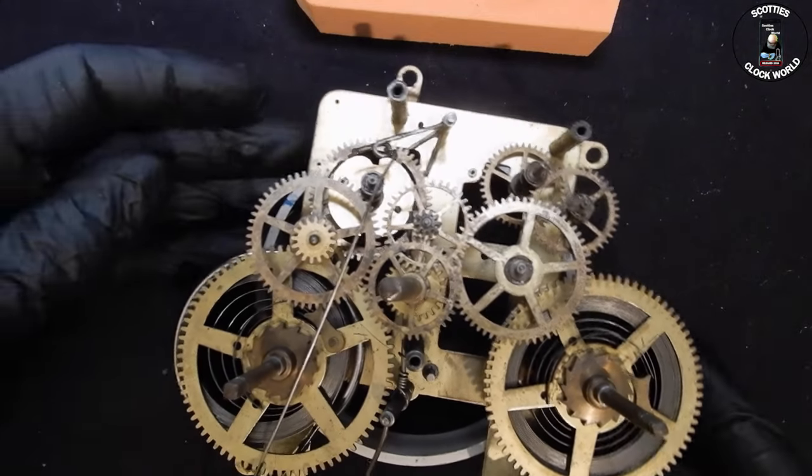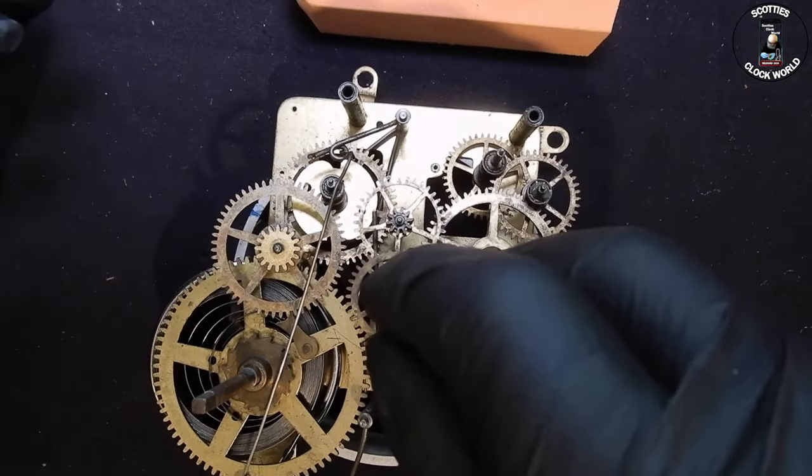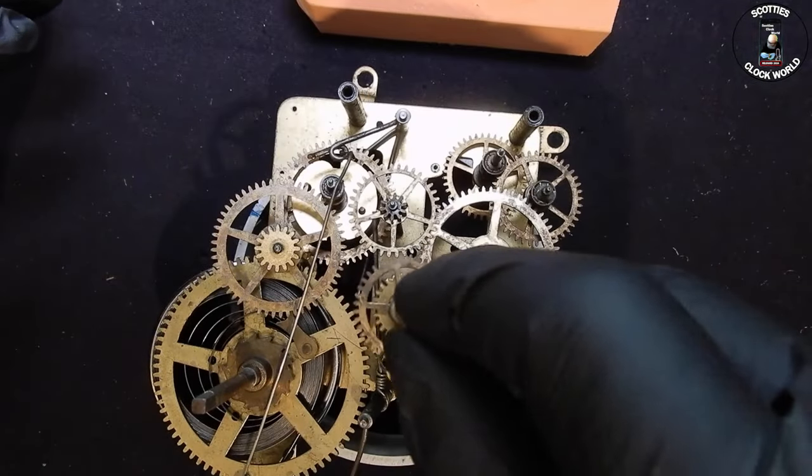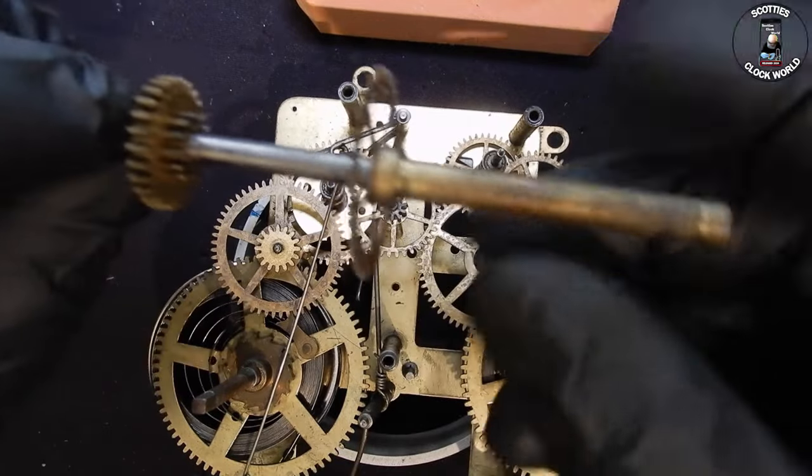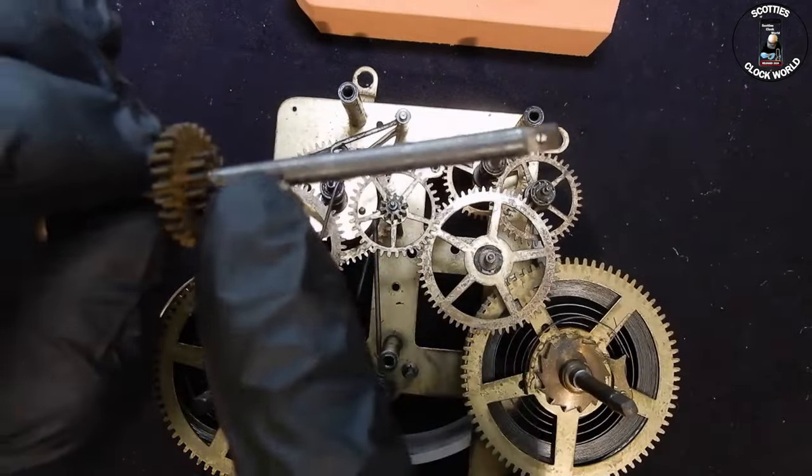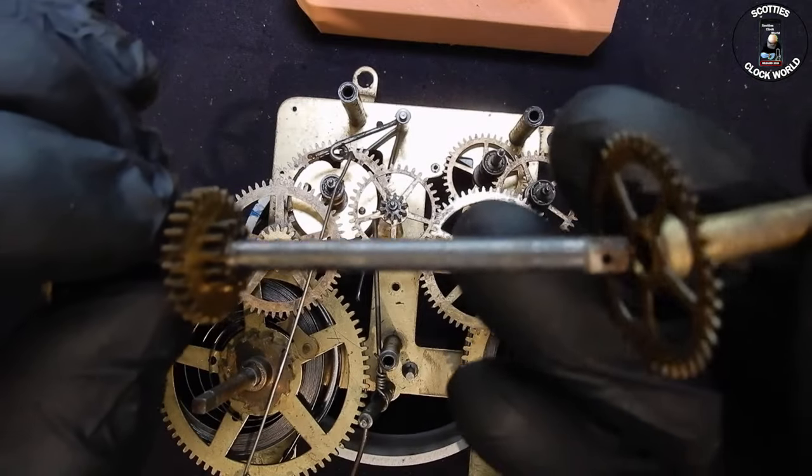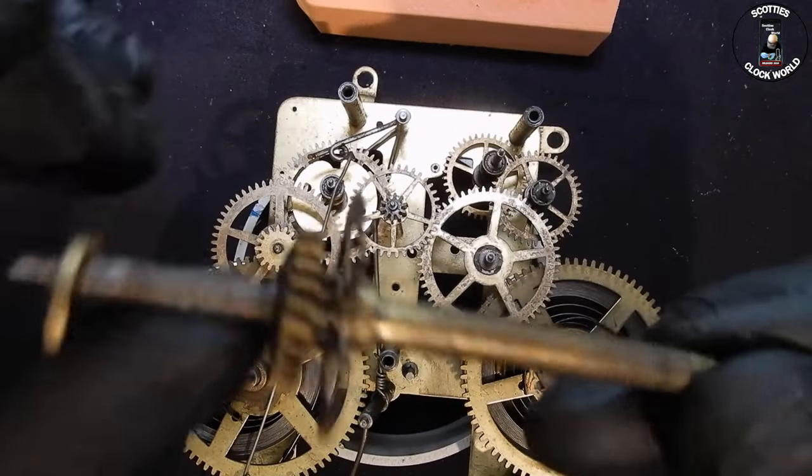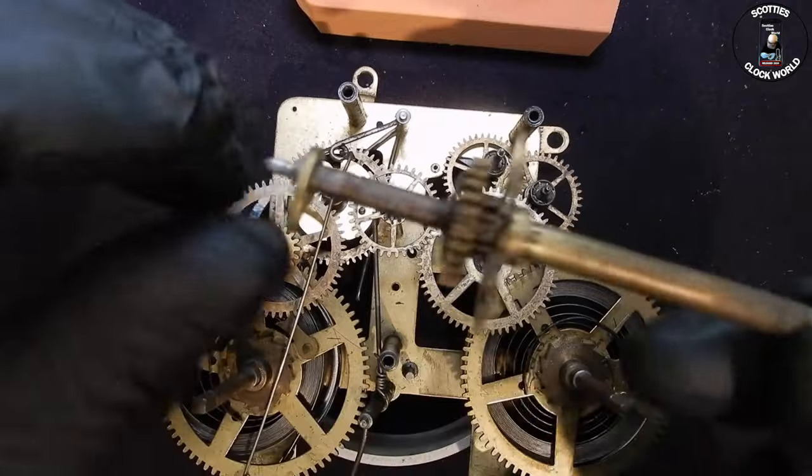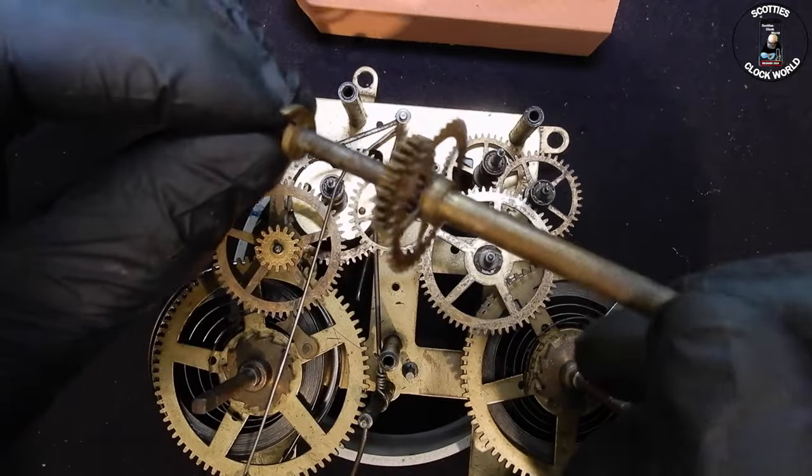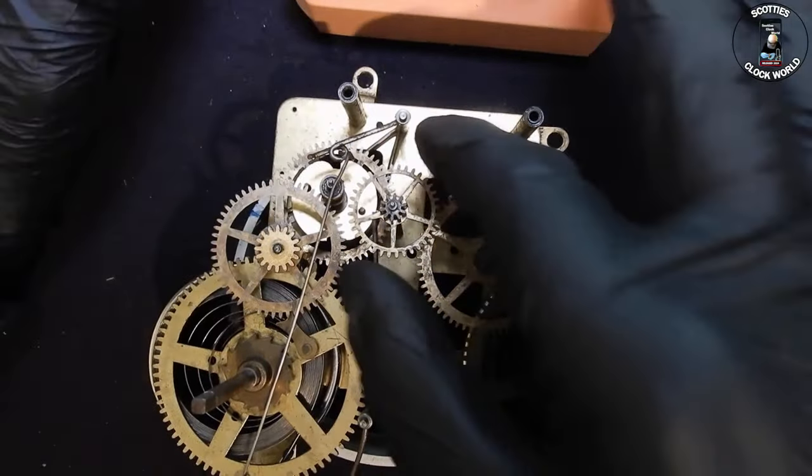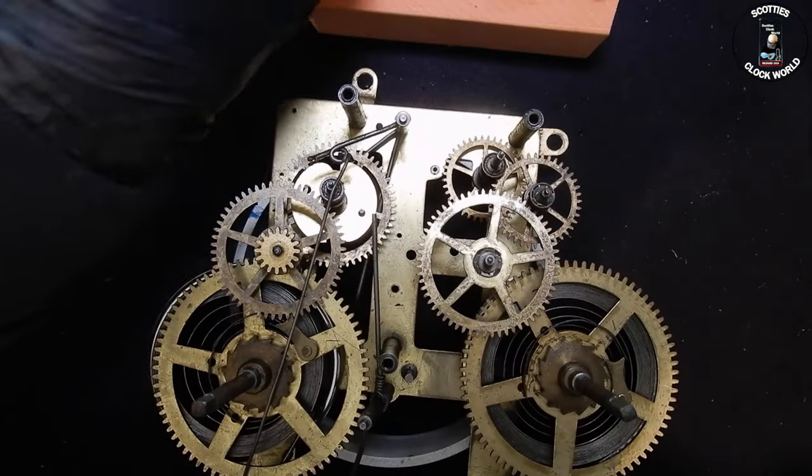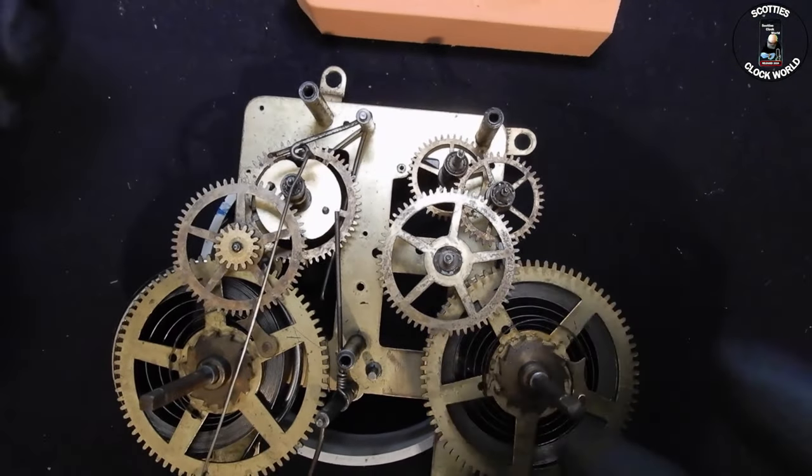To make it easier, I'll come down to the center here. Motion works. The cannon pipe, minute arbor, hour wheel, and minute wheel. I'll put that in the center, then put that piece up there. Now it's a little bit easier to get going.